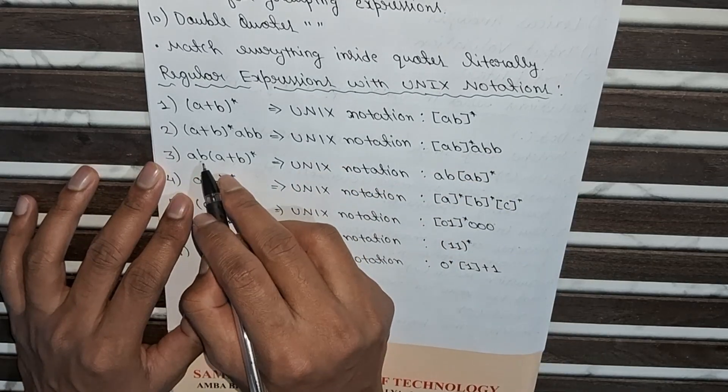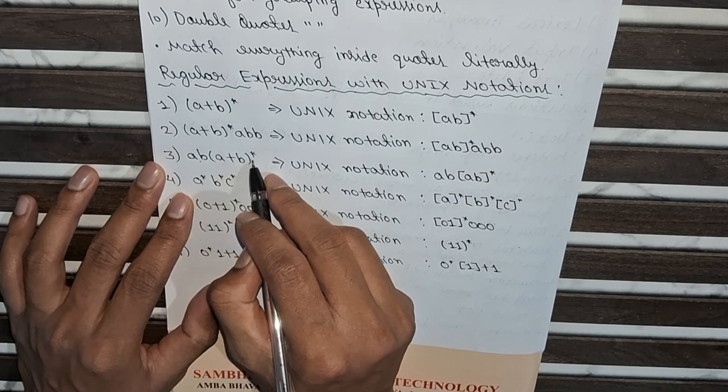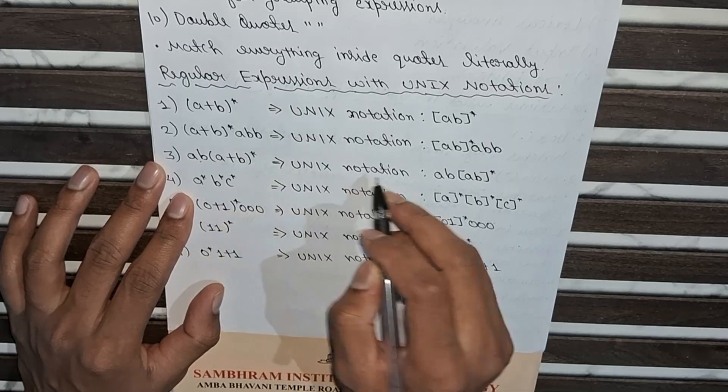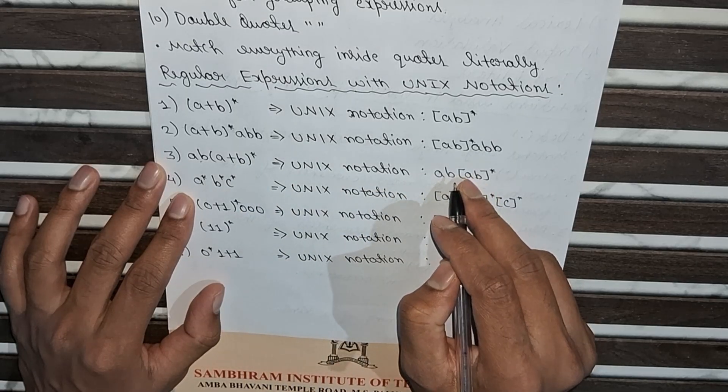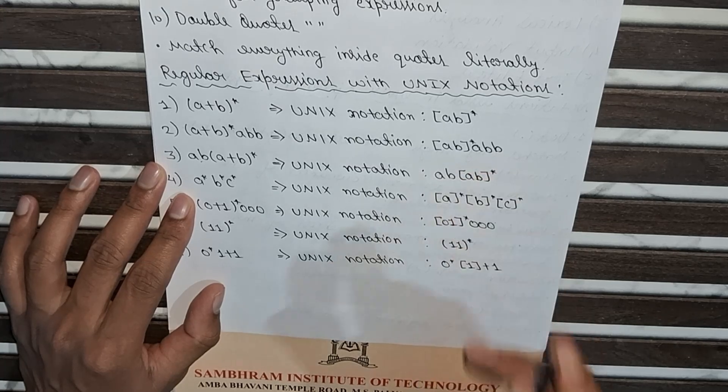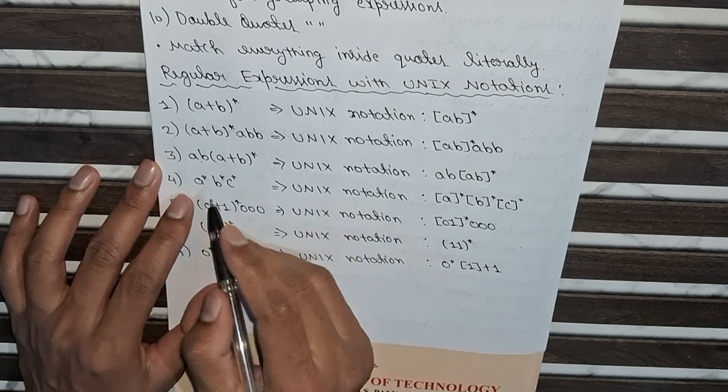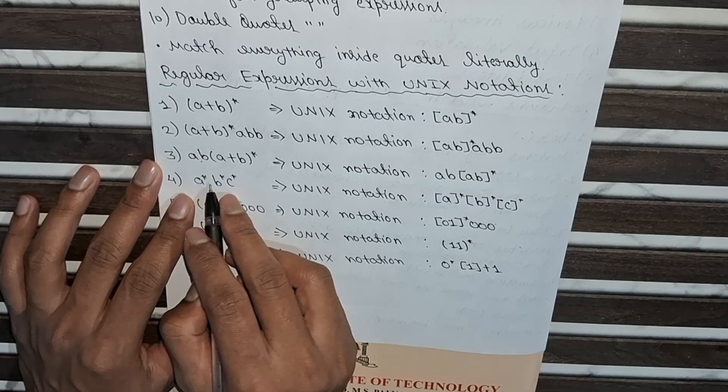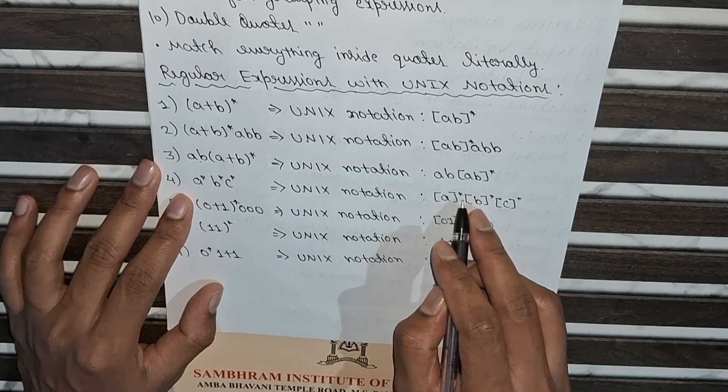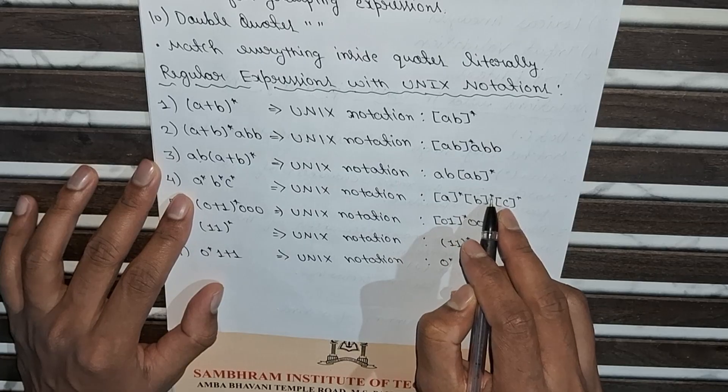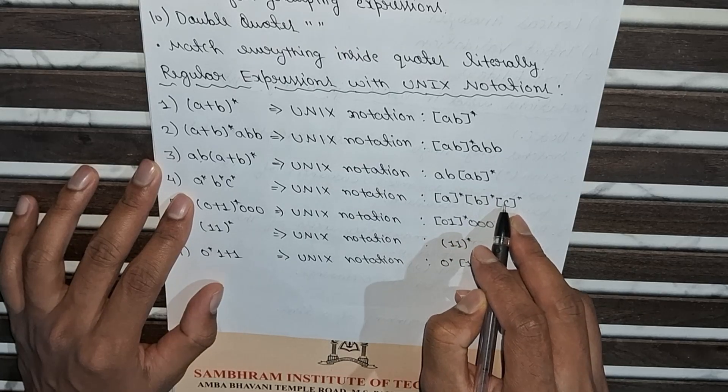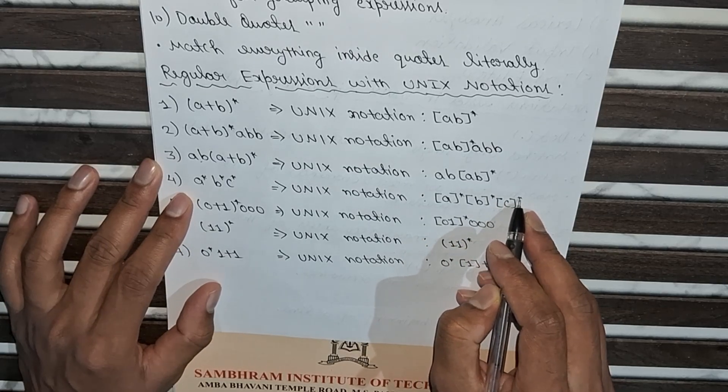We will write it like ab and under square brackets we will write ab and after the square brackets we will write star. In fourth one, in the square brackets under a we will write star, under b we will write star, and under c of the square bracket after that we will write the star.